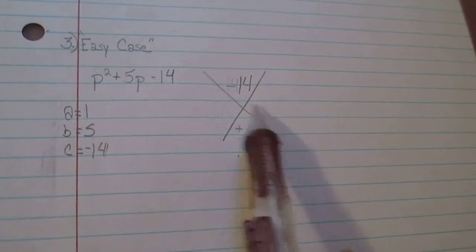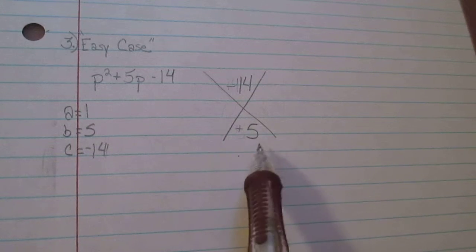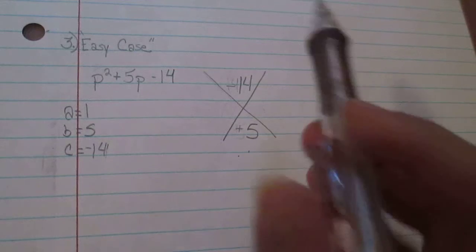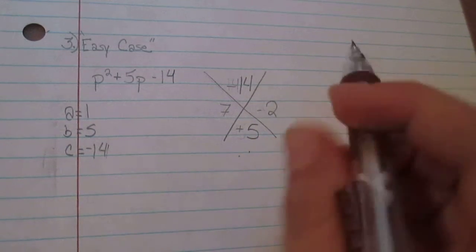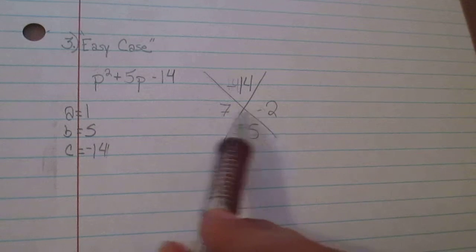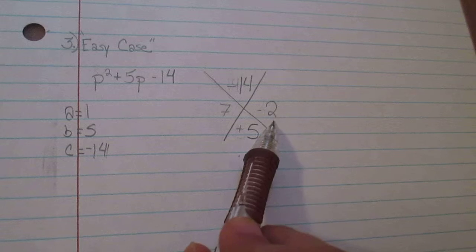So now I'm going to find the two numbers that both multiply to equal -14 and both add to become positive 5. And those numbers are 7 and -2 because 7 - 2 = 5 and then 7 × -2 = -14.